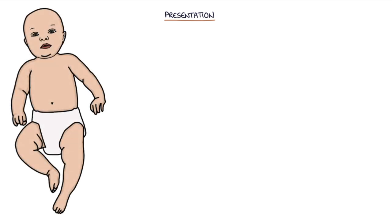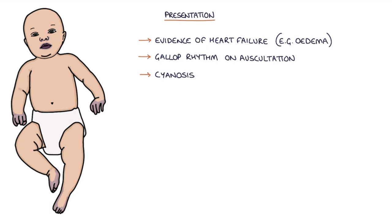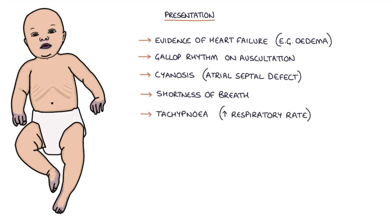So how does it present? The typical presenting features include evidence of heart failure, for example edema, a gallop rhythm heard on auscultation, cyanosis if there's an associated atrial septal defect, shortness of breath and tachypnea which is a raised respiratory rate, poor feeding and potentially collapse or cardiac arrest.